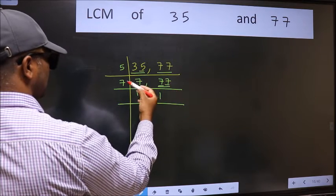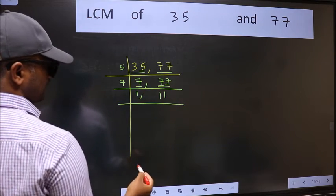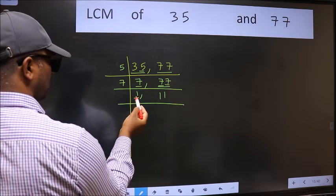The other number 7, when do we get 7 in the 7 table? 7 times 1 is 7. Now we got 1 here.